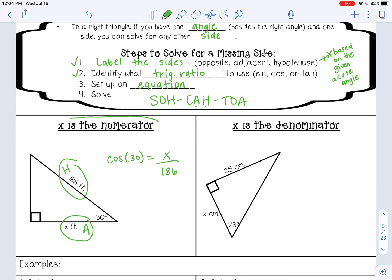This is what I'm talking about when it says x is in the numerator. To solve and get x by itself, we can multiply by 186 on both sides. This is going to cancel, so I just have x.